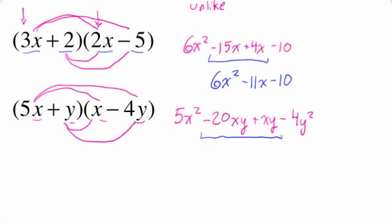And true to form, because we have the same structure in both of these binomials, we actually have like terms. So our final answer is 5X squared minus 19XY minus 4Y squared. Final answer.